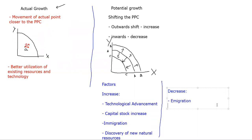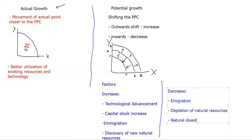For factors causing a decrease - an inward shift: emigration means people leaving the country, decreasing the labor force and hence potential. Depletion of natural resources, particularly important for non-renewable resources - if you use up all the coal and oil, your potential to produce goes down. Natural disasters like earthquakes also decrease your potential, and wars similarly reduce and decrease your potential, basically shifting the PPC inwards.